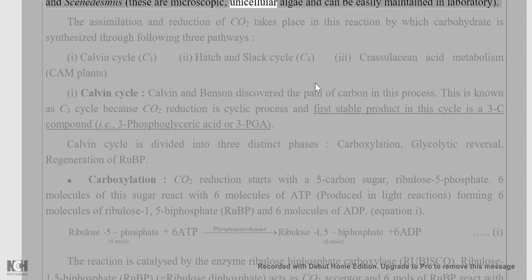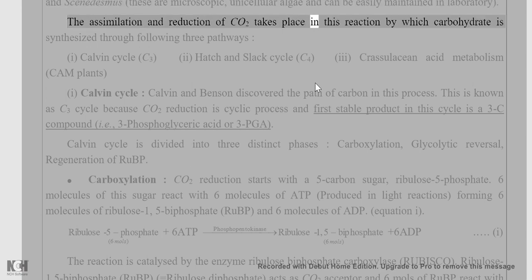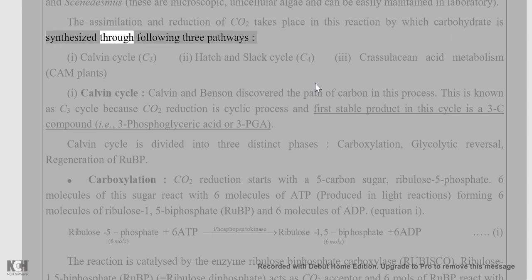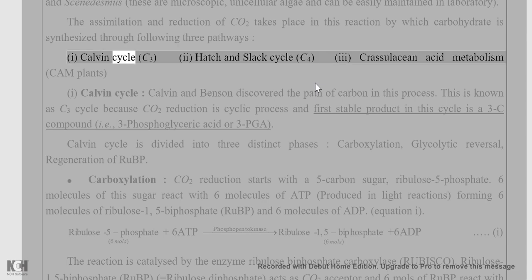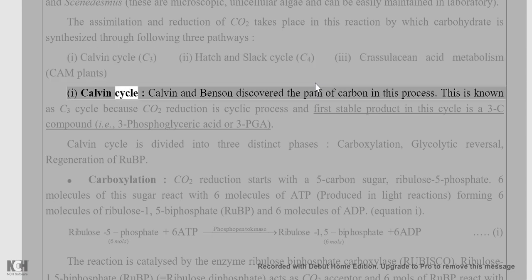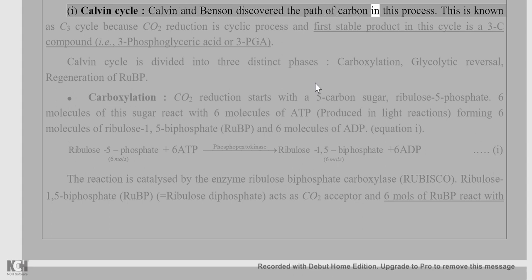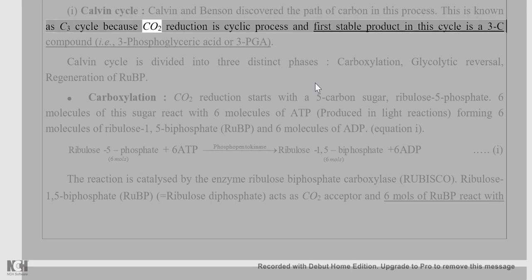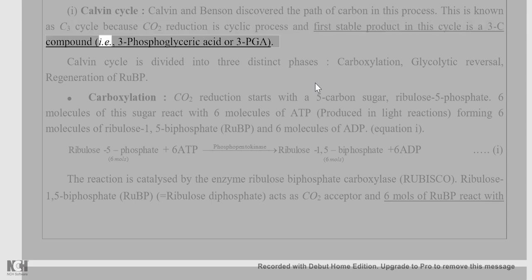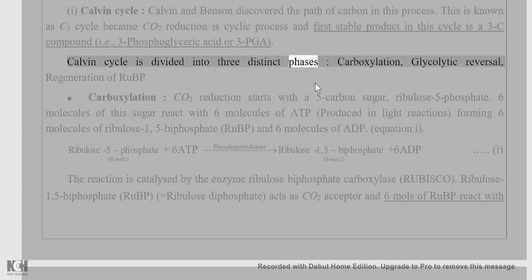The assimilation and reduction of CO2 takes place through three pathways: (i) Calvin cycle (C3), (ii) Hatch and Slack cycle (C4), (iii) Crassulacean acid metabolism (CAM). Calvin and Benson discovered the path of carbon in the Calvin process. It is known as the C3 cycle because CO2 reduction is a cyclic process and the first stable product is a 3-carbon compound — 3-phosphoglyceric acid (3-PGA). The Calvin cycle is divided into three distinct phases: carboxylation, glycolytic reversal, and regeneration of RuBP.